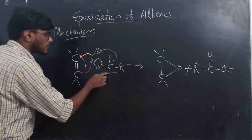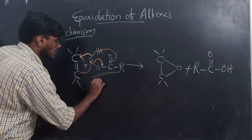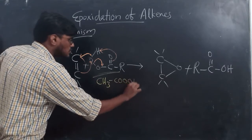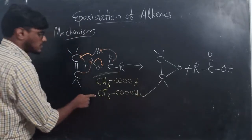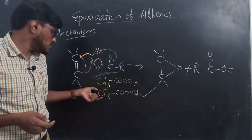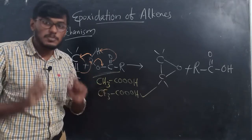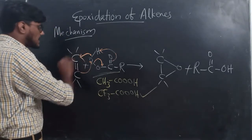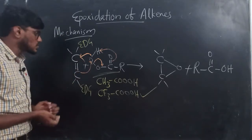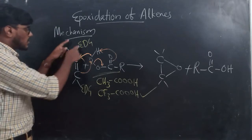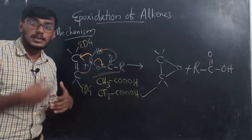You must remember: if an electron-withdrawing group is present in the peroxy acid, the rate of reaction increases. For example, CH3COOOH is a peroxy acid, but CF3COOOH is more effective because CF3 is an electron-withdrawing group. Similarly, when an electron-donating group is present on the alkene, it also increases the rate of the epoxidation reaction.